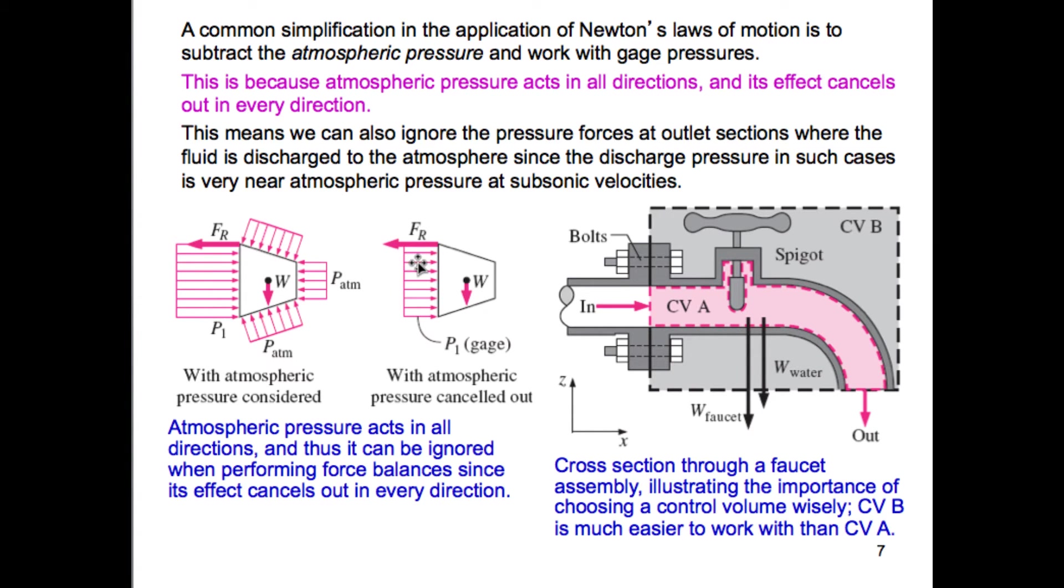Now a thing I need to mention here, too, is in our analysis of these systems, we're going to be dealing with gauge pressures all the time. The reason being because atmospheric pressures will just end up canceling out, and actually using gauge pressure helps simplify our analysis some. So we're assuming atmospheric pressure acts on all parts of our system. Therefore, we're only going to be considering gauge pressures in our analyses.